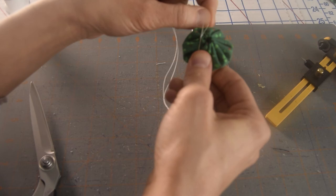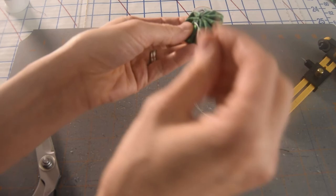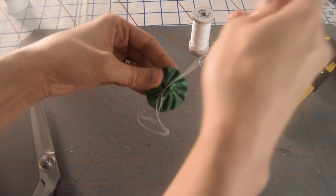So again, bring the needle really close to the end of the fabric. Go one, two, three, four times around. And then push it through. Keep moving that knot all the way down to the end. And then I'm going to bring the rest of my thread back through to the inside.